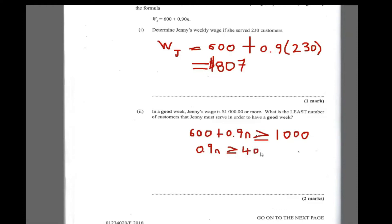So we subtract $600 from both sides and we get 0.9N is greater than or equal to $400. And then we divide through by 0.9, divide both sides by 0.9. And that will tell us how many people Jenny served for the week in order to make more than $1,000. So N is greater than or equal to $400 over 0.9, that is 444.4. But in reality, what do we know? In reality, we know that you can't serve 444.4.